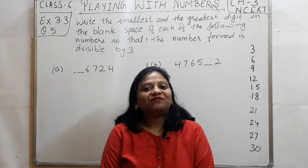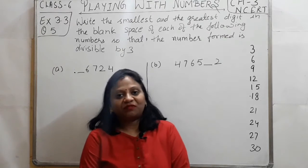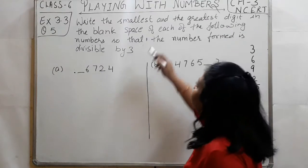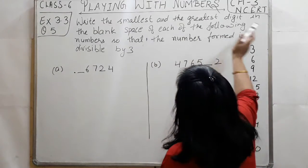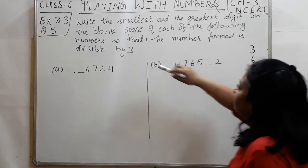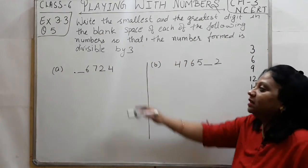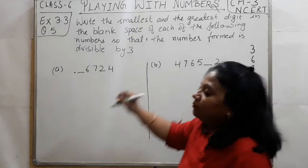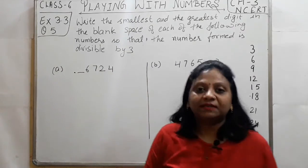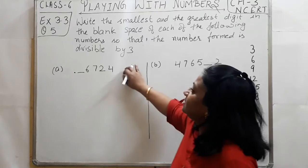Hello everyone, this is Sonia Jain from Online Education. Coming to question number 5 of Exercise 3.3 — the question is: write the smallest and the greatest digits in the blank space of the following number so that the number formed is divisible by 3. We need to find a digit for the blank space so that the whole number is divisible by 3.